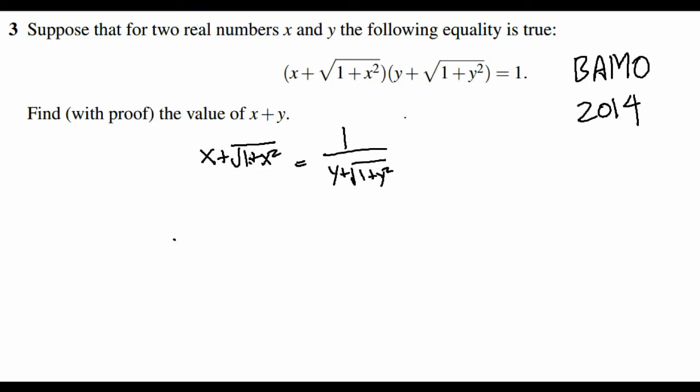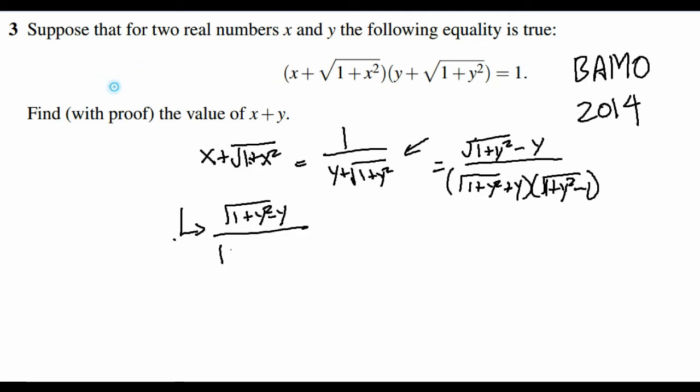And you know what? Your math teachers always tell you that you don't want irrational numbers in the denominator. So we will multiply the top and bottom of this fraction by the conjugate to get square root 1 plus y squared minus y over 1 plus y squared plus y times square root 1 plus y squared minus y. And that actually simplifies to square root 1 plus y squared minus y over 1 plus y squared minus y squared, which just equals square root 1 plus y squared minus y.